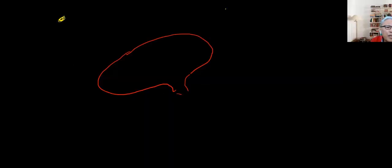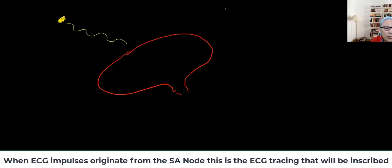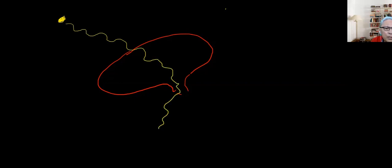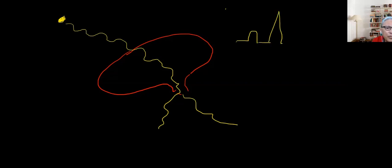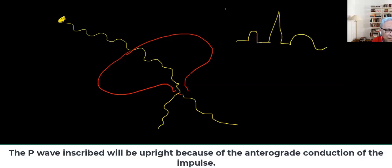So let's say now that a waveform originates from the sinus node. It goes into the atria, it goes into the AV node, it goes into the bundle branches, and then onto the Purkinje fibers. And so what happens to the P wave? The P wave is a positive waveform. So it will result in something like this.